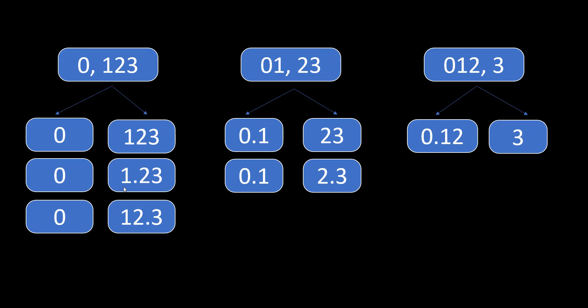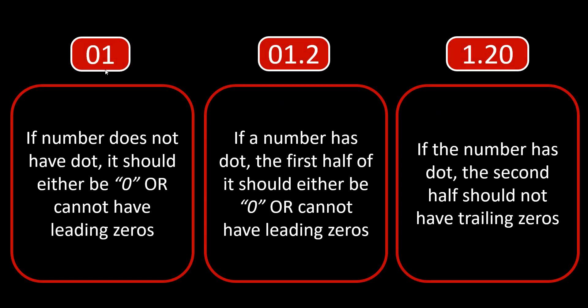For validation we have three basic rules. First, if the number has no dot, it should either be zero itself or should not contain any leading zero. Second, if it has a dot, the part before the dot should either be zero or have no leading zeros — same as the no-dot case. Third, the part after the dot should not have any trailing zeros: for example, 1.20 is not valid — it should just be 1.2.